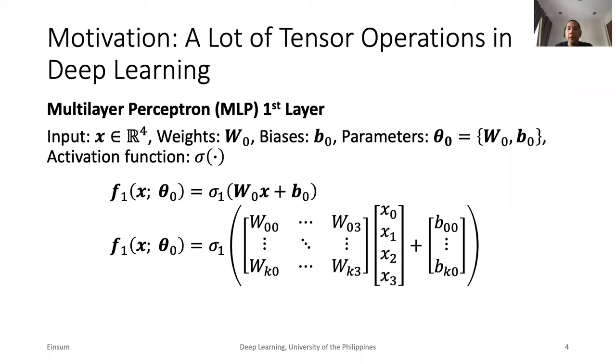In deep learning, we perform a lot of tensor operations. For example, in multilayer perceptron or MLP, we repeatedly perform multiplication of weights and input features plus addition of an optional bias term. Finally, the output goes through a nonlinear activation function. The common problem is that before we can perform the desired operation, all tensor operands must be in the proper shape. We must also call the right function name and syntax.